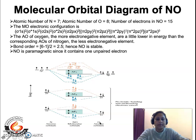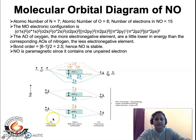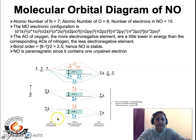This is because of the more electronegative nature of the oxygen atom. Please remember that in any heteronuclear diatomic molecule, the more electronegative atom's atomic orbitals will be represented at a slightly lower energy level compared to the other atom. In NO, oxygen is more electronegative than nitrogen, hence its atomic orbitals are shown a little lower.